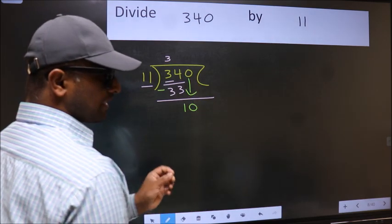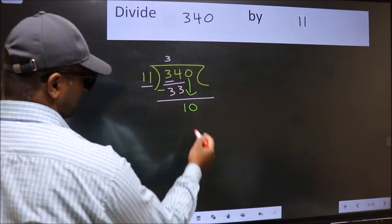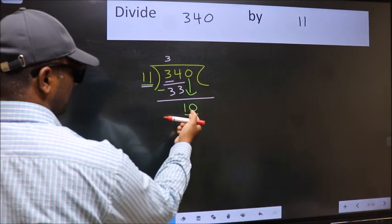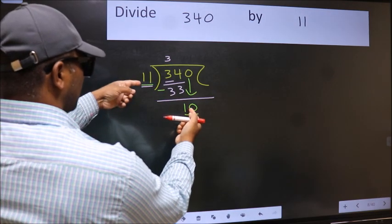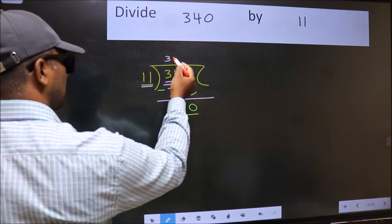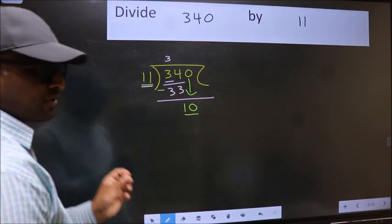After this step, the mistake happens. And the mistake is this: Here we have 10 and here 11. 10 is smaller than 11. So what many do is they directly put dot and take 0, which is wrong.